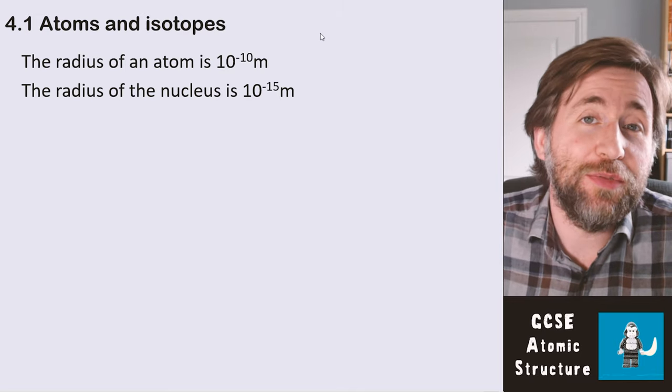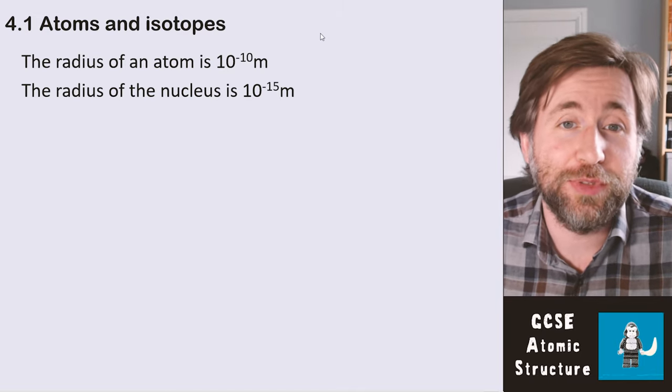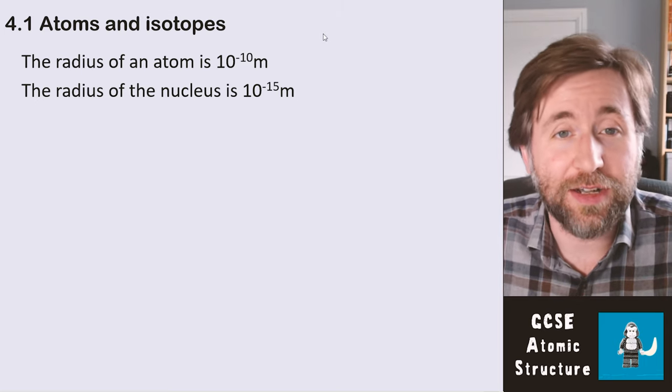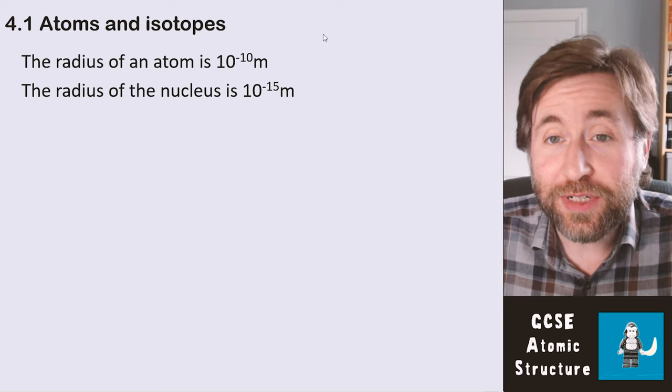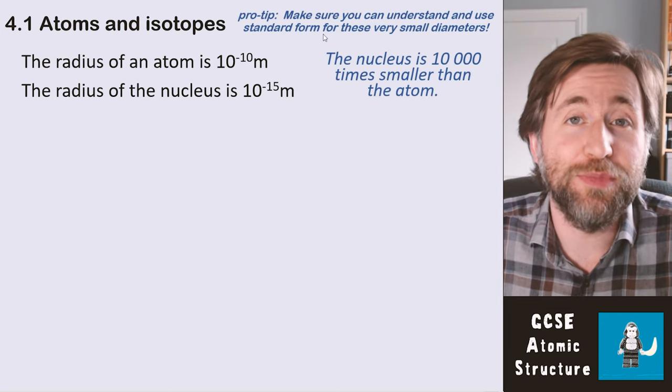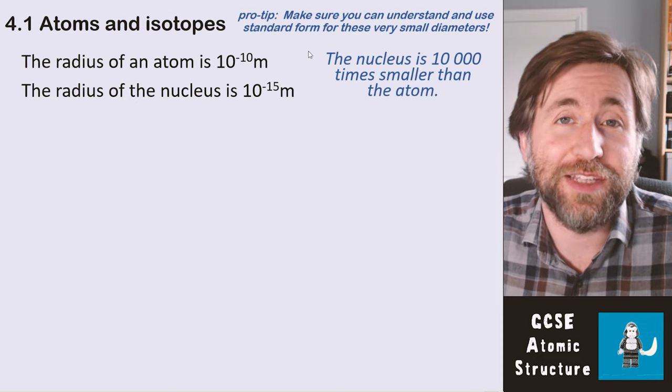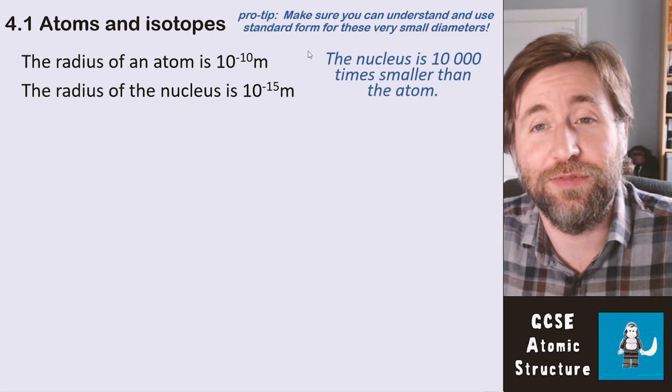Atoms and isotopes. First, what is the actual size of these things? The radius of an atom is 10 to the minus 10 meters. That's a tiny size, but the radius of the nucleus is 10,000 times smaller than that—10 to the minus 15. My pro tip here is that you need to know these values and you also need to be able to use them in standard form.